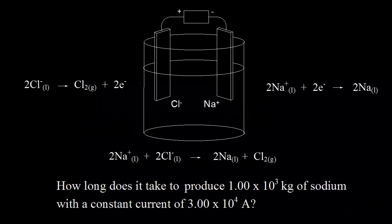Here's a simplified diagram for the electrolysis of molten sodium chloride. If you melt solid sodium chloride, you get molten sodium chloride — you get sodium ions and liquid chloride anions. So that's what we have here: sodium ions and chloride anions.